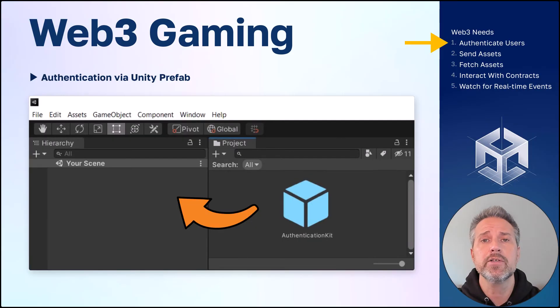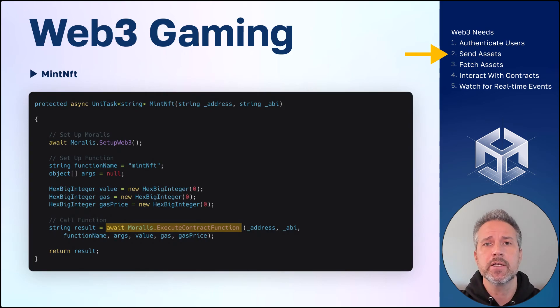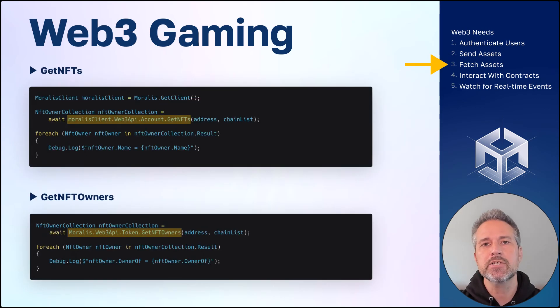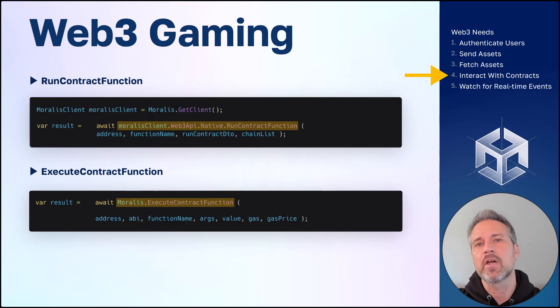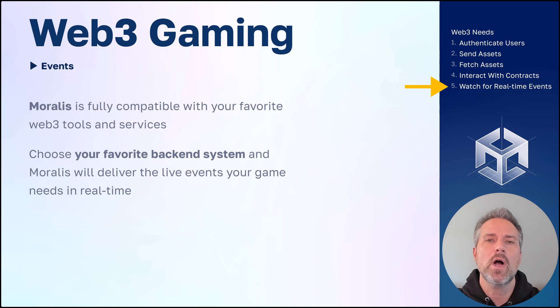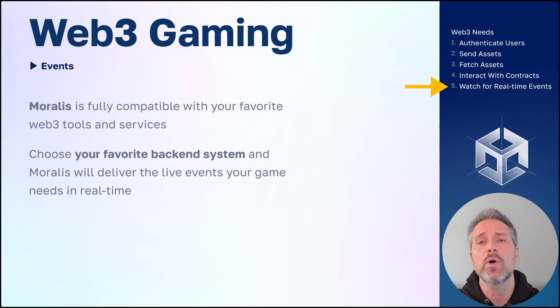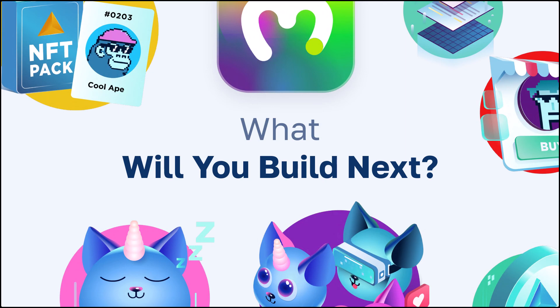To authenticate users with Morales, use the Authentication Kit prefab — drag that into your scene and your authentication is handled. To send assets with Morales, we can use Execute Contract Function, for example to mint an NFT. To fetch assets from the blockchain, Morales offers many options including Get NFTs and Get NFT Owners. To interact with contracts, Morales offers Run Contract Function for read operations and Execute Contract Function for read and write operations. To watch for real-time events, Morales is fully compatible with your favorite Web3 tools and services — you can connect Morales to your favorite backend and receive live events in real-time that your game needs.